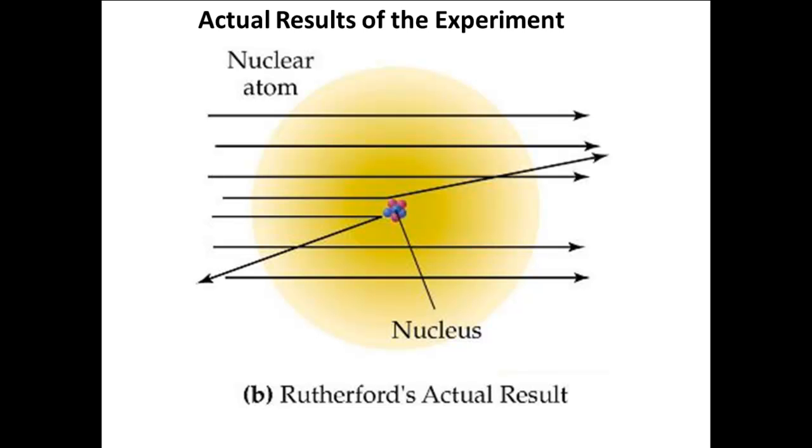As was discovered later, the nucleus contains protons and neutrons and is extremely small, one ten-thousandth of the radius of the atom.